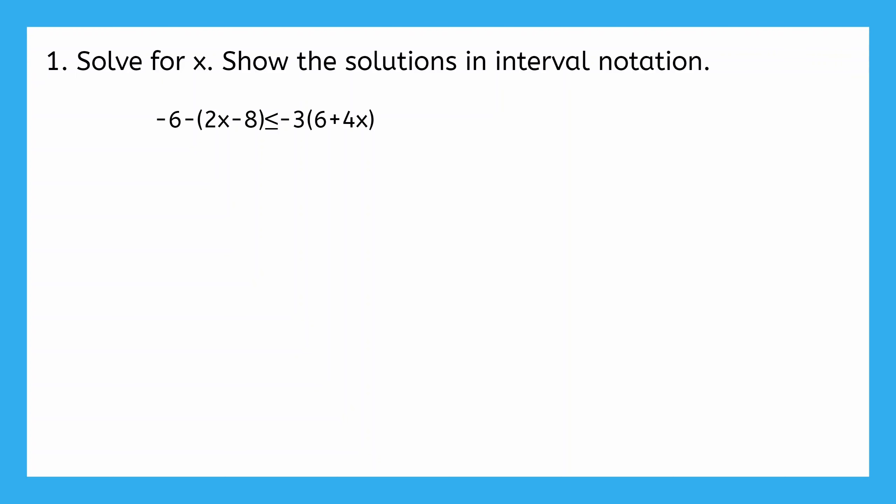This says to solve for x and show the solution in interval notation. We have negative 6 minus the quantity of 2x minus 8 is less than or equal to negative 3 times the quantity of 6 plus 4x. Just like we saw in our equations unit, each side of an inequality is also its own expression, so I can focus on one side at a time and use my simplifying strategies like distribution and combining like terms.